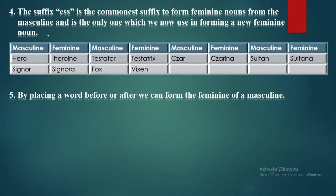The suffix -ess is the most common suffix used to form feminine nouns from masculine, and it is the one most commonly used when forming new feminine nouns today. However, you could also form the feminine using -ine, -ina, or -trix. Examples: hero/heroine, signor/signora, testator/testatrix.